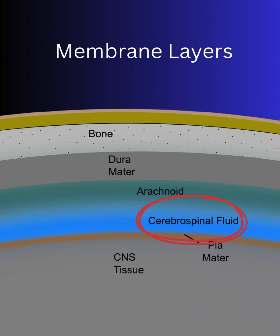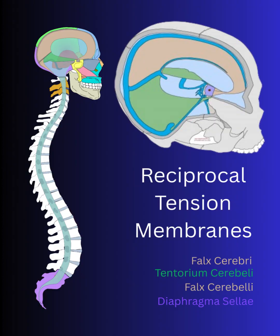Cerebrospinal fluid flows between the arachnoid and the pia mater. The cranial bones around the brain form the vault. The meninges line the vault and form partitions dividing the vault into upper, lower, left, and right sections.